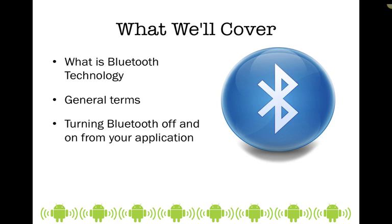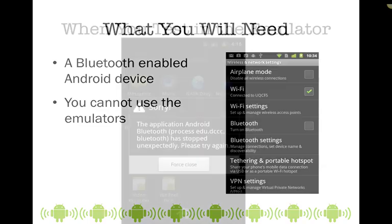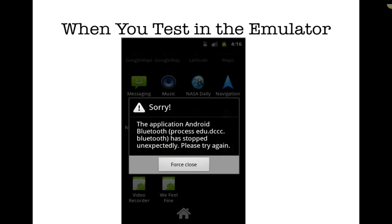One of the things you're going to find in working with Bluetooth is that the emulator does not work well — it actually doesn't work at all when trying to work with Bluetooth. I'm going to have some screenshots that I'll be showing in this presentation and then going into a live code look at setting it up. What you'll need in order to work with this demo is a device that has Bluetooth capabilities. You can't use the emulator. Even though you may see the option in your emulator to turn Bluetooth off and on, it doesn't work. The same application that displayed an error in the emulator worked perfectly fine on the actual device.